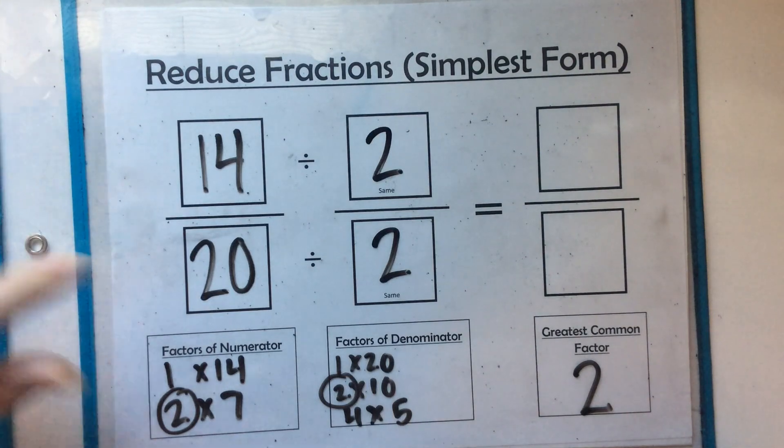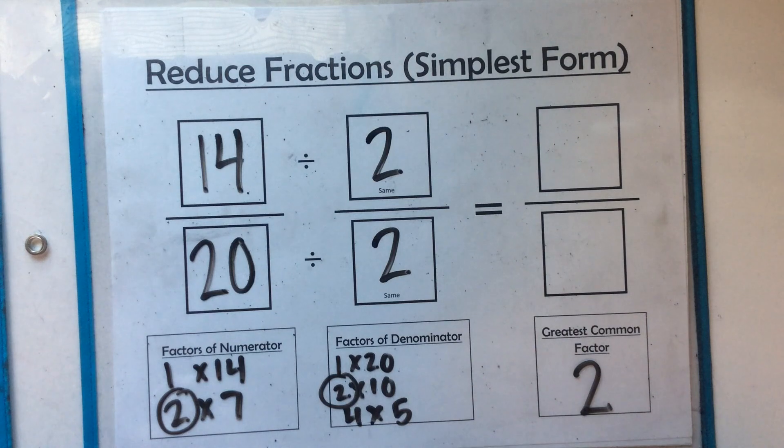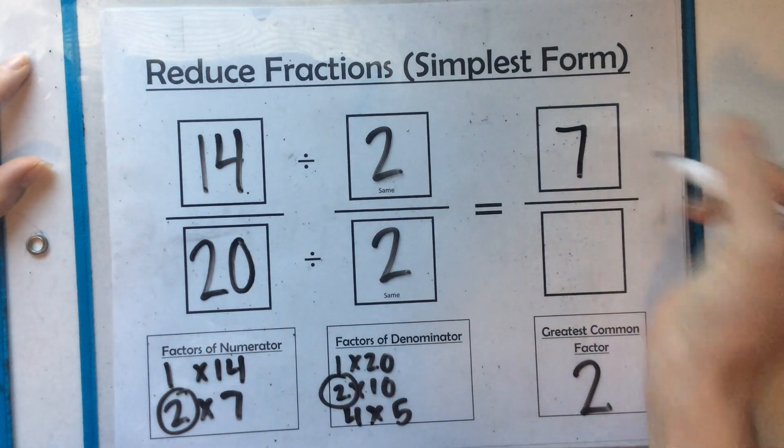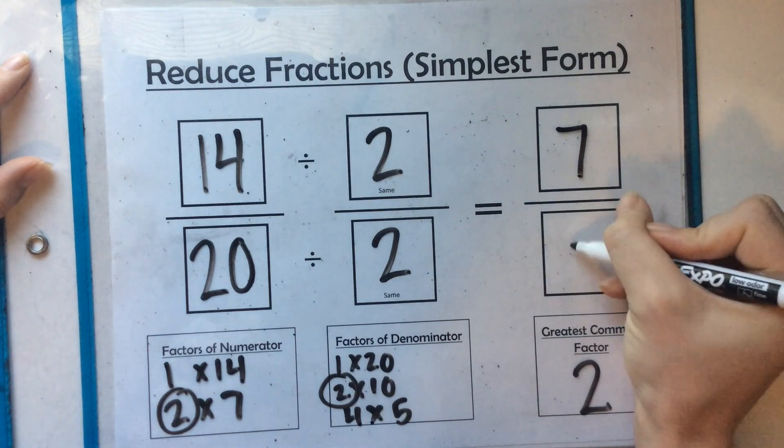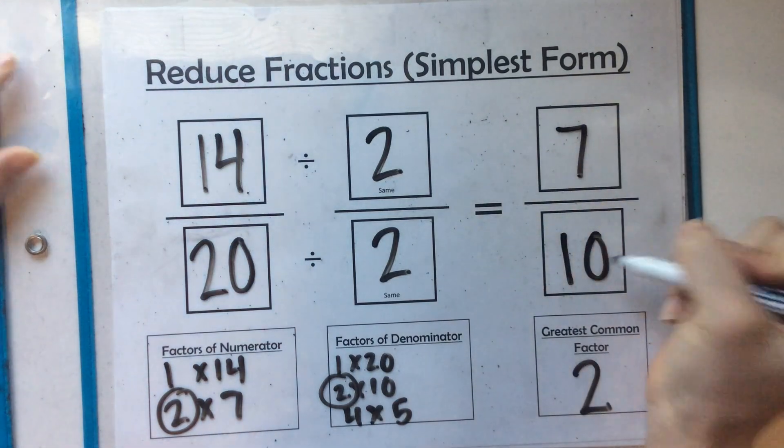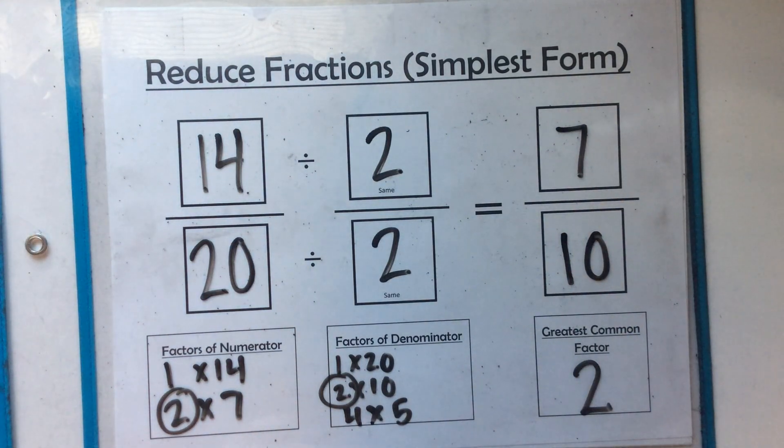You can also think about this in a simpler way by thinking, are both of these numbers even numbers? If they are, then you can always divide by 2. But sometimes you'll need to divide by 2 over and over again before you can get to simplest form. 14 divided by 2 is 7. 20 divided by 2 is 10. So 7 tenths is our simplest form.